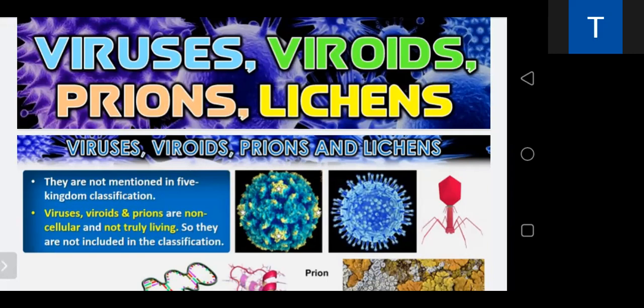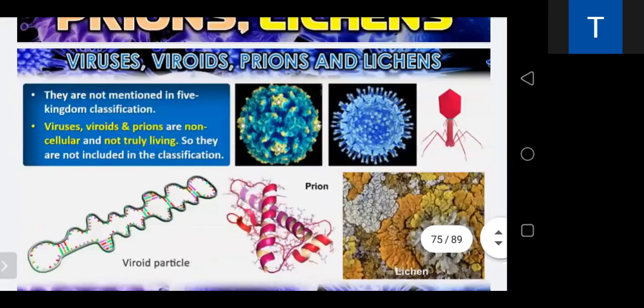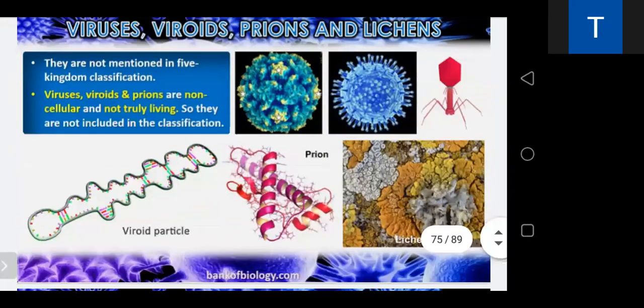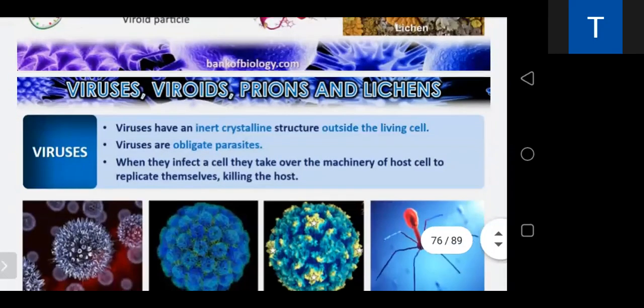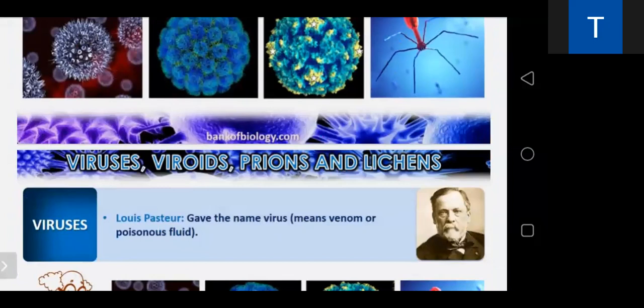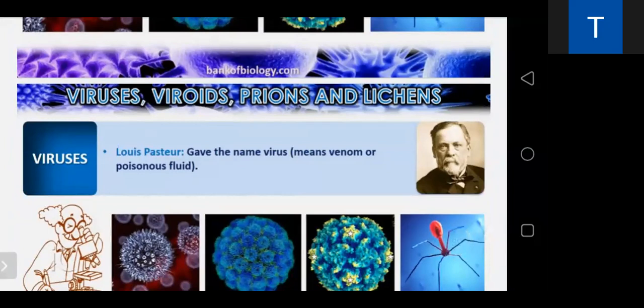Viruses cannot complete their life cycle without a specific host. They do not have biosynthetic machinery. Once they infect a living host cell, they take over the host cell's machinery, replicate themselves, and kill the host. The name 'virus' was given by Louis Pasteur, a great scientist. Pasteurization is a technique named after him — nowadays milk in packets is pasteurized. He is considered the father of microbiology.